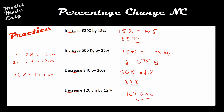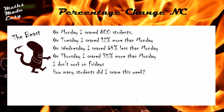Well done if you got all four correct. Now there's an extension problem: on Monday a beast scared 800 students, and we're told what happens on Tuesday, Wednesday, Thursday, and Friday. We need to work out how many students he scared in total this week. Pause the video and have a go. The key percentages of 800 are: 50% = 400, 25% = 200, 10% = 80, 5% = 40, and 1% = 8.